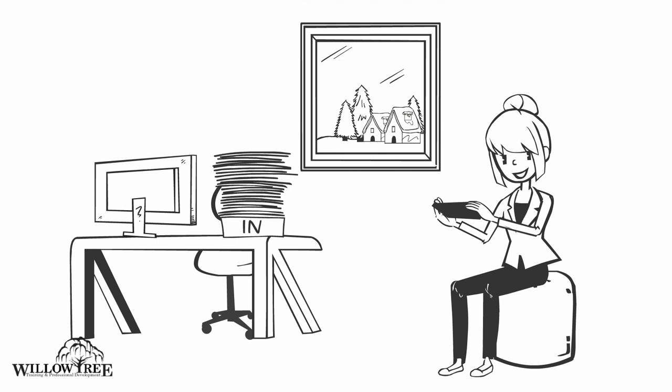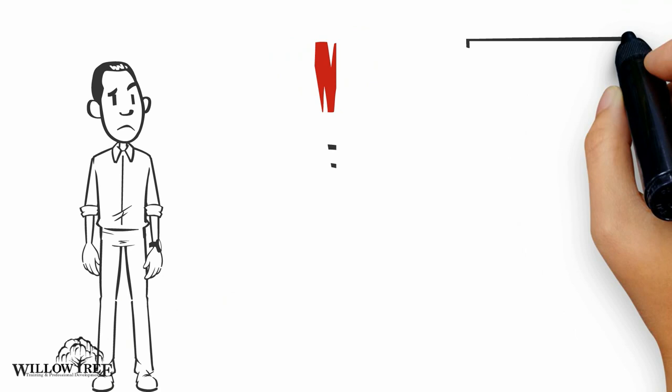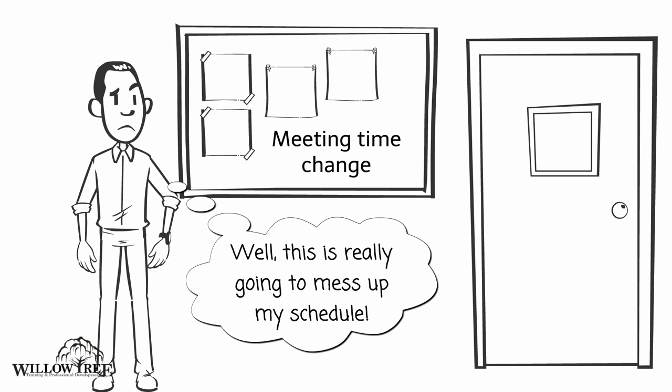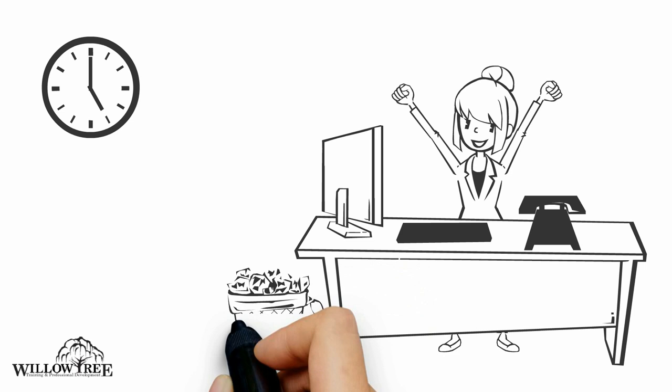Probably the biggest difference between judges and perceivers is how they view time. Judges see time as finite and something to be managed. They structure and organize their day, preferring to stick to their planned schedule. If they don't have a deadline for a project, they will usually give themselves one so they can feel that sense of accomplishment when they finish.